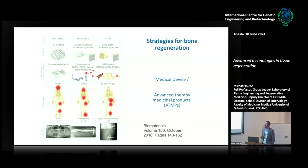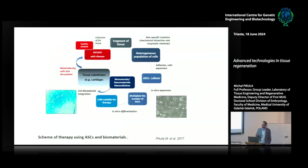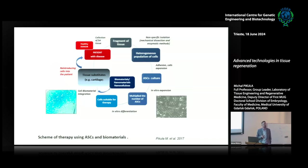The idea is that we have a patient with disease, we take a fragment of tissue — that can be, for example, fat tissue — with stem cells, we culture them, expand them. Sometimes we can modify them genetically, sometimes we can differentiate them to, for example, chondrocytes, then bind with biomaterials and then transplant. So we reintroduce cells into the patient. This is one of the strategies — for example, cartilage. One of the most important challenges now is how to transplant chondrocytes and a fragment of cartilage with appropriate microenvironment, oxygen, nutrients, everything.